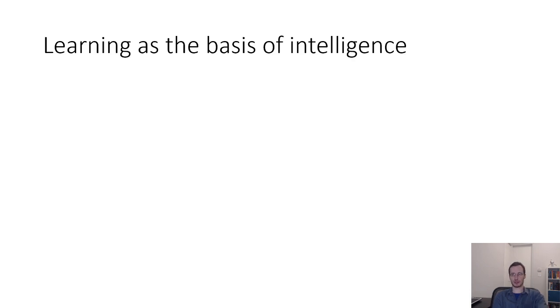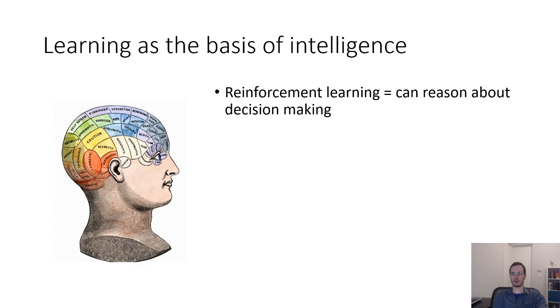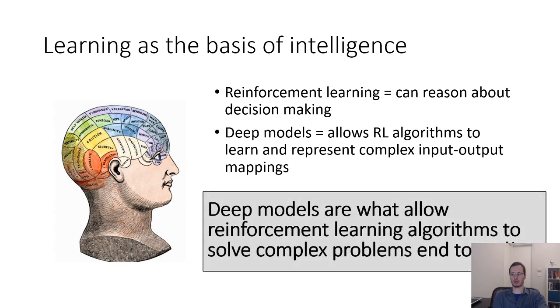Now that we have better perspective from having learned about a number of reinforcement learning methods, maybe we can think back to those ideas and think about how what we've learned affects how we should think about them. In the very first lecture, I talked about how learning could be viewed as the basis of intelligence, that reinforcement learning is the mechanism that allows us to reason about decision-making, and how deep models allow RL algorithms to learn and represent complex input-output mappings. Together, deep models are what allow reinforcement learning algorithms to solve complex problems end-to-end.